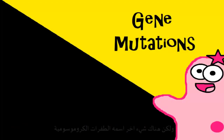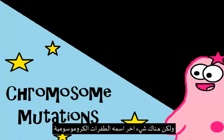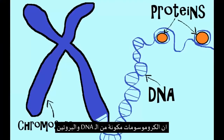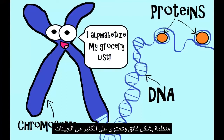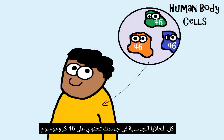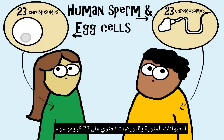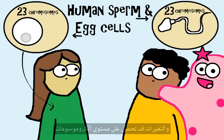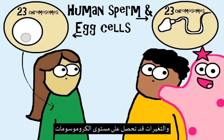Those were all types of gene mutations, but we also have chromosome mutations. Remember that chromosomes are made up of DNA and protein — they're highly organized and have a lot of genes on them. All body cells have 46 chromosomes, while human sperm and egg cells have 23 chromosomes. Changes can occur at that large chromosome scale too.